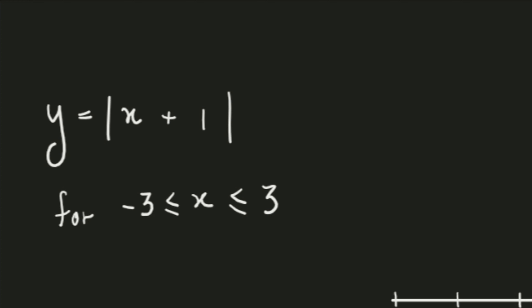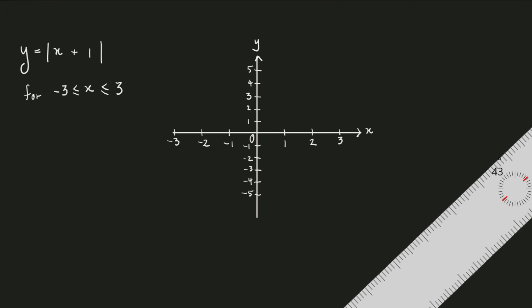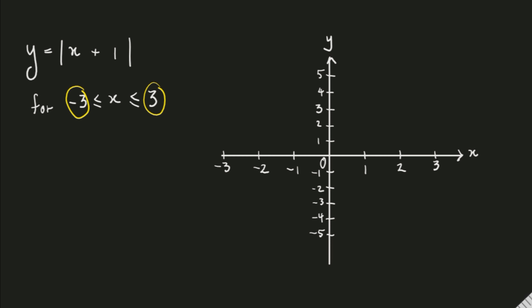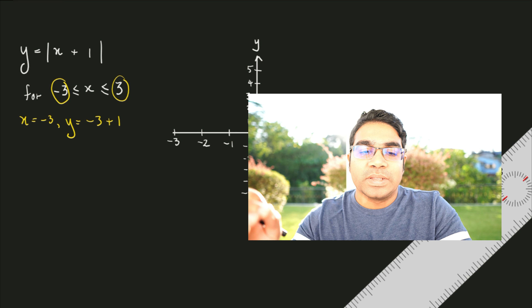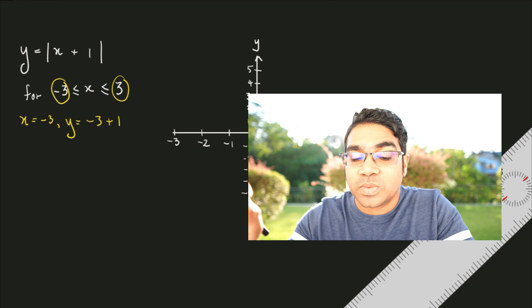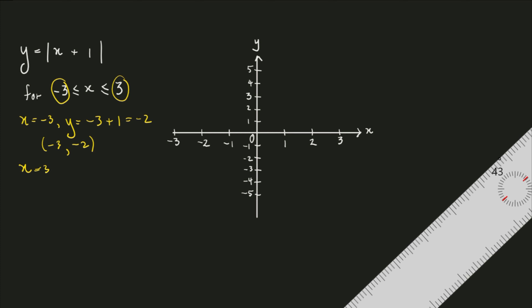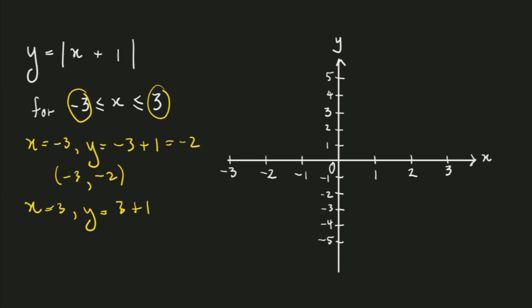Let's try another one: Y equals modulus of X plus 1. We do the same thing again — to draw the graph, we need two points using the extremes of the domain, negative 3 and 3. When X equals negative 3, Y equals negative 3 plus 1, which is negative 2. Remember, we are sketching Y equals X plus 1 first, not the modulus function yet. So our first point is negative 3, negative 2. When X equals 3, Y equals 3 plus 1, which is 4. Our second point is 3, 4.